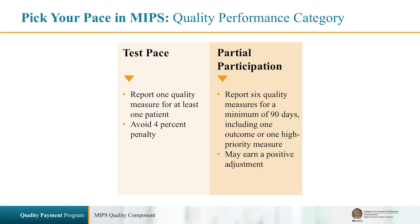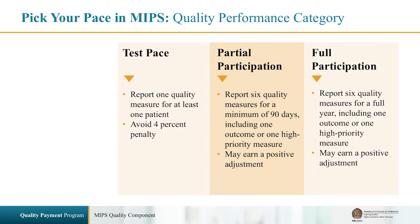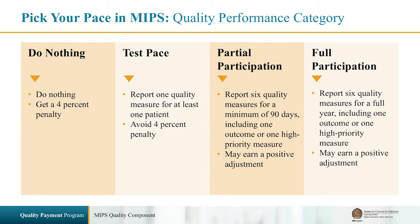To potentially earn a positive adjustment, you can report at least six measures for 50% of your patient population for a minimum of 90 days, or to maximize your performance, report at least six measures for a full year. If you choose to do nothing, you will automatically receive a 4% penalty in 2019 based on your 2017 performance.